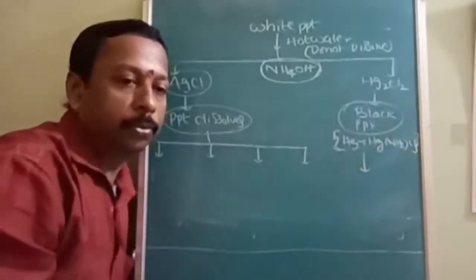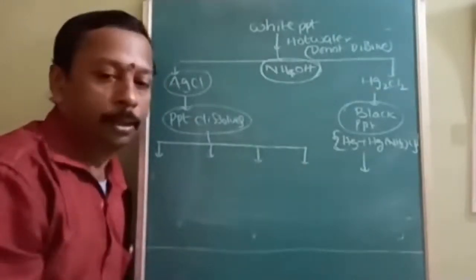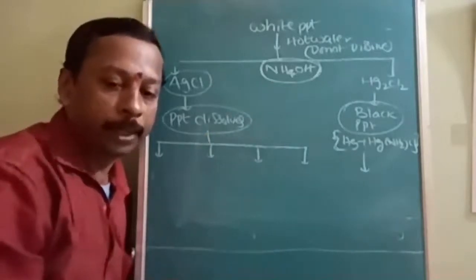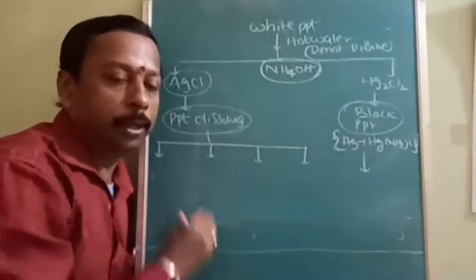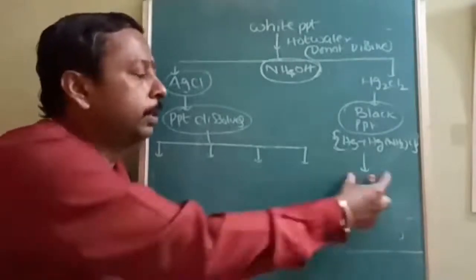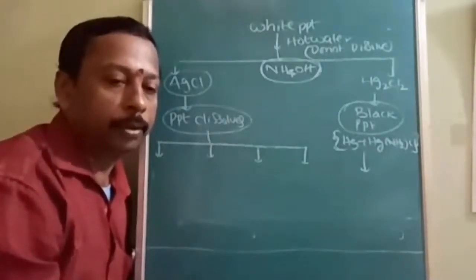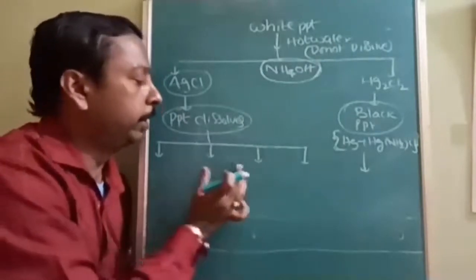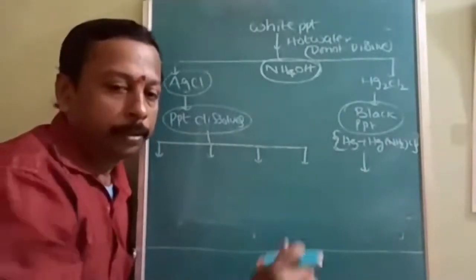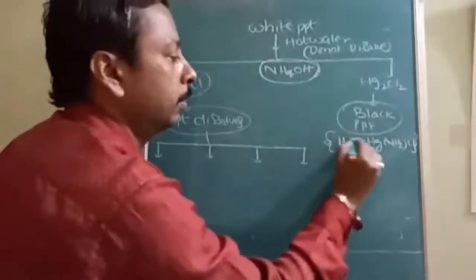To confirm further, the dissolved precipitate (from AgCl dissolving in NH₄OH) is divided into four parts, each reacted with a different reagent for confirmatory tests of silver.